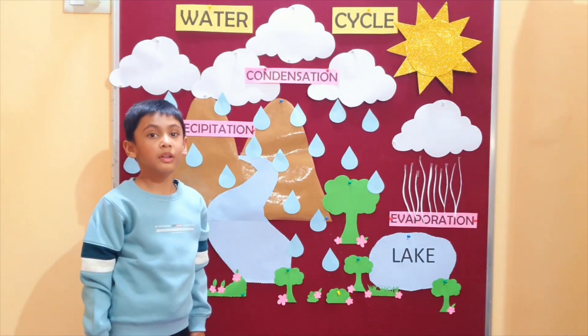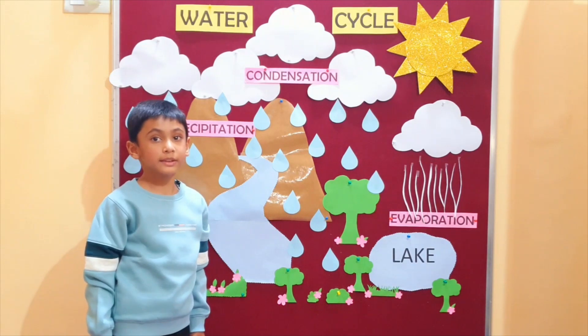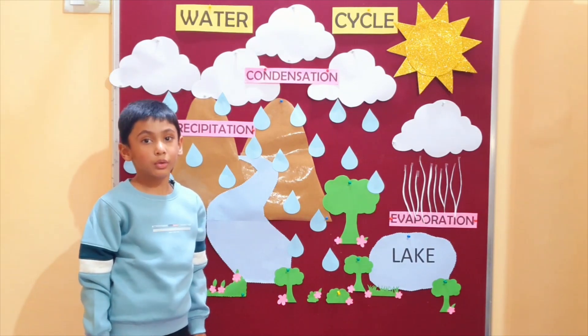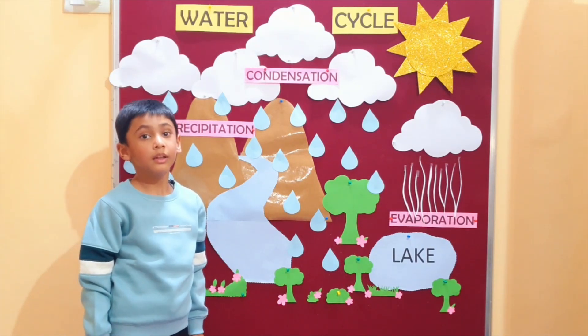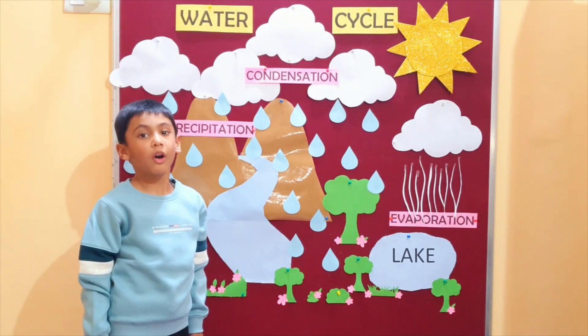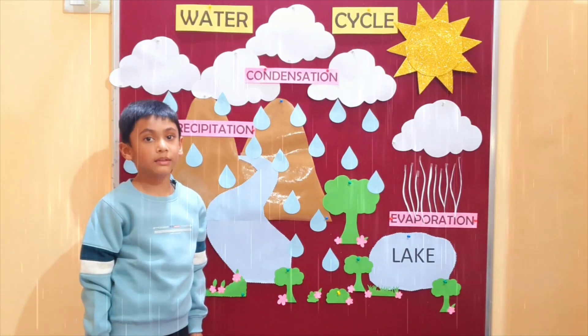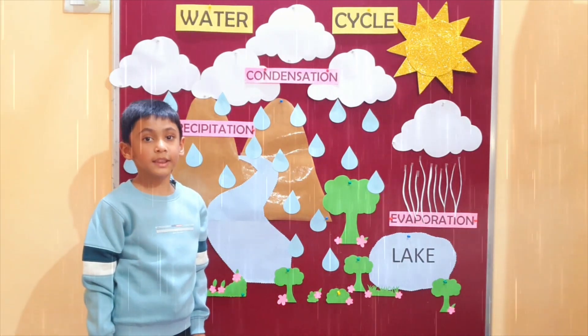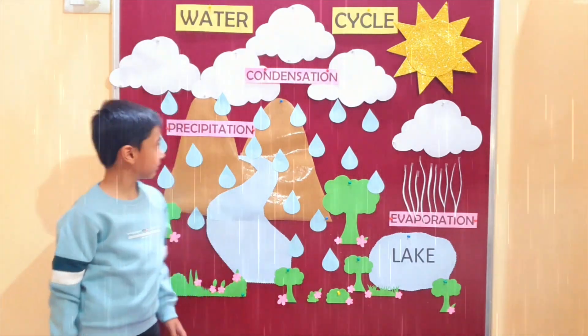The water droplets grow in size until they are too heavy and then they fall as rain. This is called precipitation.